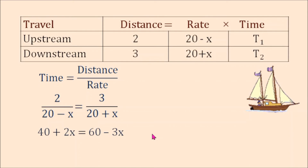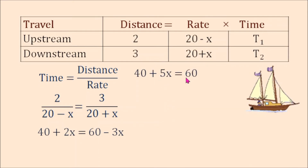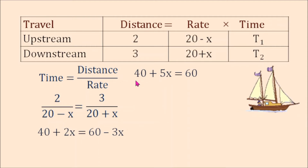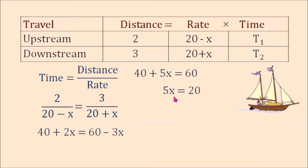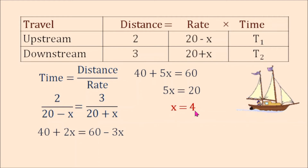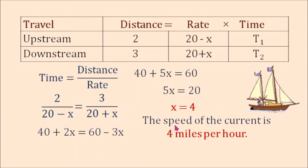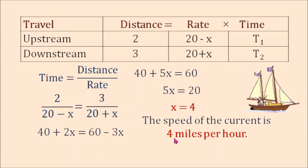Adding 3x on both sides, we have 40 plus 5x equals 60. Subtracting 40 from both sides, we have 5x equals 20. Dividing both sides by 5, x equals 4. So this means the speed of the current is 4 miles per hour.